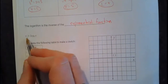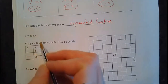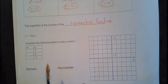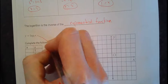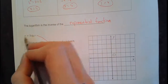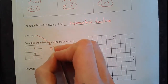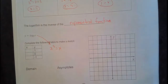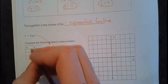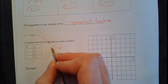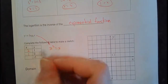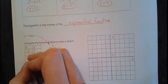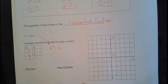So first off, we want to graph y equals log base 2 of x. Probably the easiest way to do a logarithm is instead of plugging in for x, we want to plug in for y. I'll convert this into an exponential first — this would be 2 to the y equals x. So fill out the y column first: 2 to the first power is 2, 2 to the 0 power is 1, and 2 to the negative 1 power is 1 over 2, which is a half.